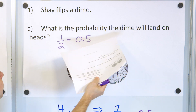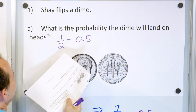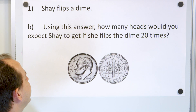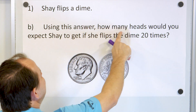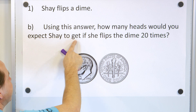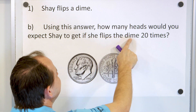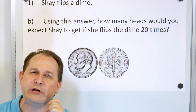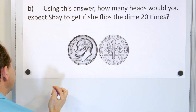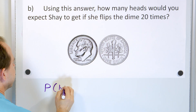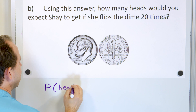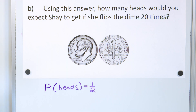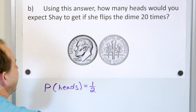Now that we know the probability of landing on heads is one half, or equivalently 0.5, let's answer part B: how many heads would you expect Shea to get if she flips the dime 20 times? We know the probability of heads is equal to one half, meaning half the time we should get heads.